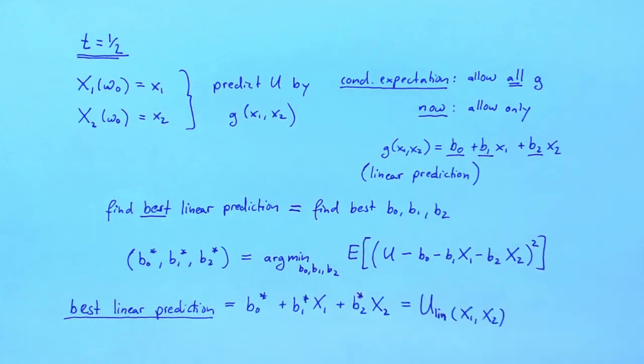The best linear prediction is given by this. Let's denote it by u lin of x1 and x2. Just like the conditional expectation, it is a random variable.